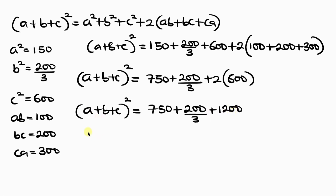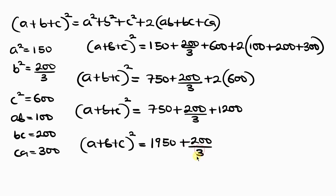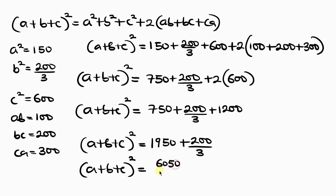Solving this fraction, we say 3 times 1950 gives 5850, plus 200 gives 6050, all over 3. So (a+b+c)² equals 6050 over 3. Our next step is to take the square root of both sides to solve for a plus b plus c.